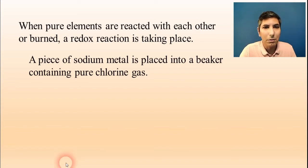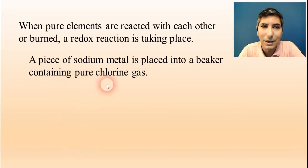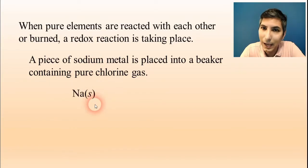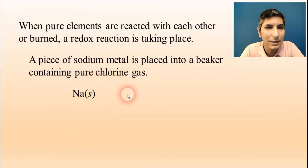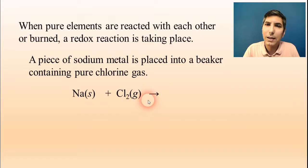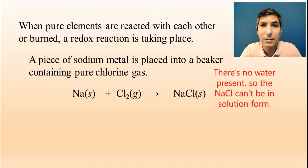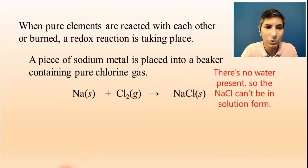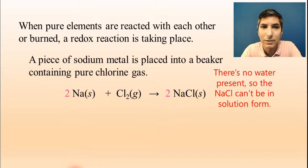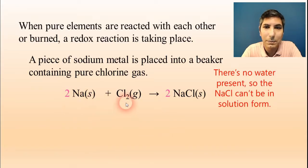For example, if we have a piece of sodium metal placed into a beaker containing pure chlorine gas, the sodium metal is Na in its elemental state, and the pure chlorine gas is Cl2 — don't forget it's diatomic. When you put those together, you make the ionic compound sodium chloride, NaCl. Notice this is solid, not solution, because there is no water mentioned in the question. You balance the equation by balancing the chlorine atoms and then the sodium atoms. You can see that sodium is being oxidized and the chlorine is being reduced.